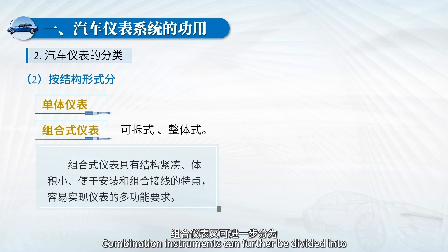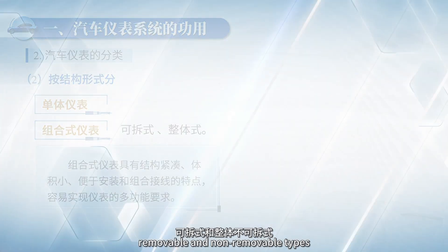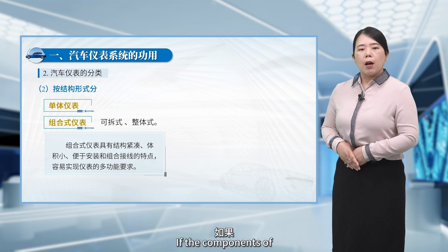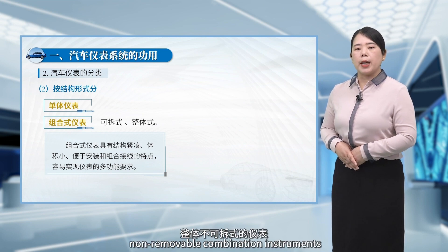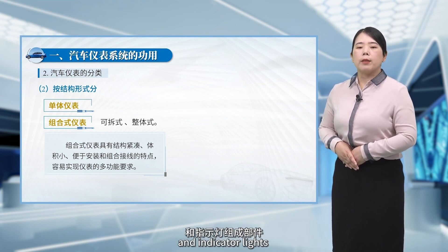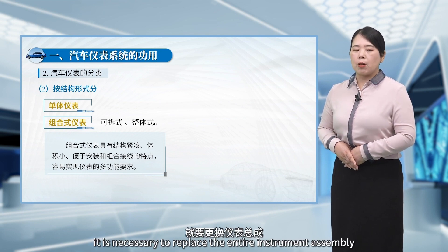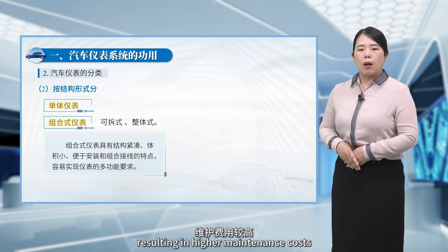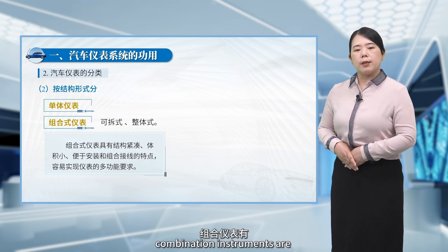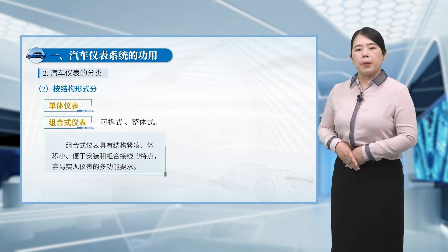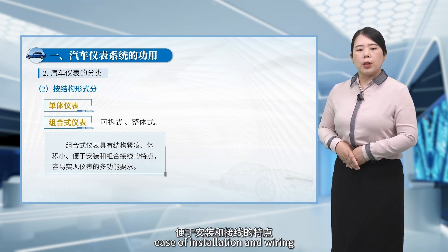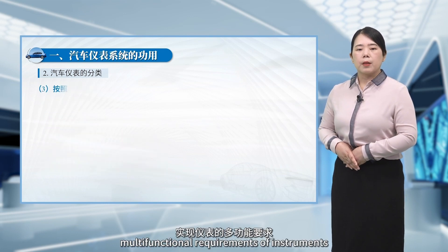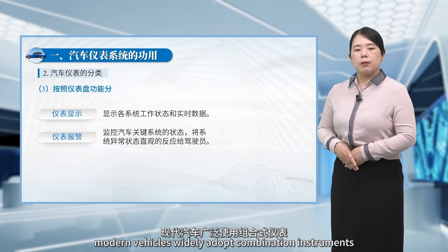Combination instruments can further be divided into removable and non-removable types. If the components of non-removable combination instruments and indicator lights are damaged, it is necessary to replace the entire instrument assembly, resulting in higher maintenance costs. However, combination instruments are favored for their compact structure, small size, ease of installation, and wiring. They are well suited for meeting the multifunctional requirements of instruments, which is why modern vehicles widely adopt combination instruments.